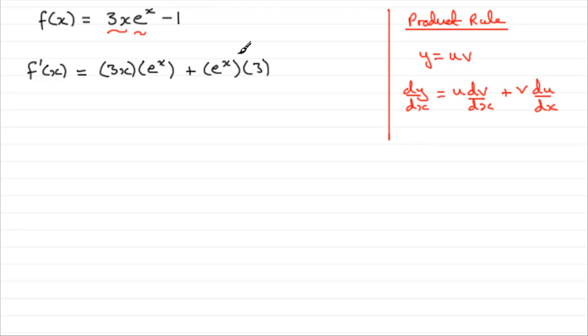Differentiate minus 1, that's going to go to 0. So there's our f dash x. We just need to clean this up, and we get 3x e to the power x, and for this term, I'd write it as plus 3 e to the x.